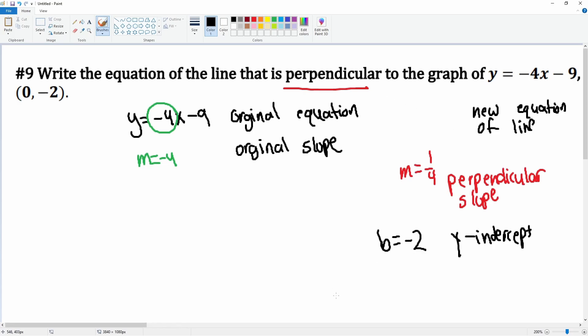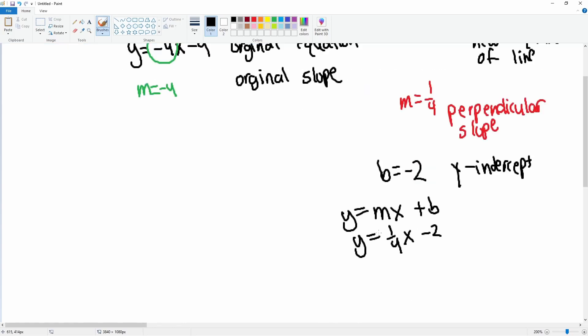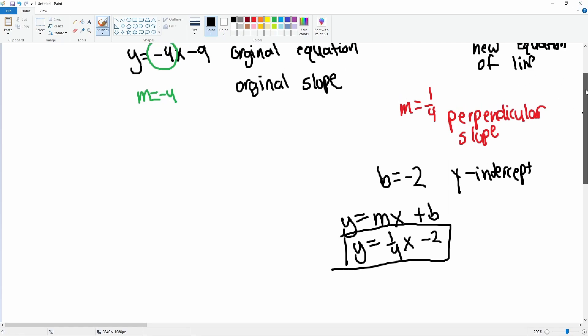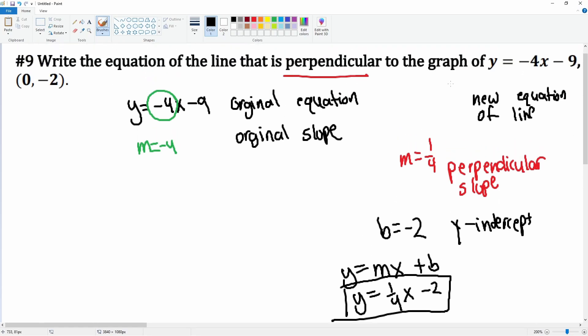So the equation is y equals mx plus b. So y equals that slope of 1 over 4x minus 2. This would be your equation that we are looking for that is perpendicular to this equation that passes through that point.